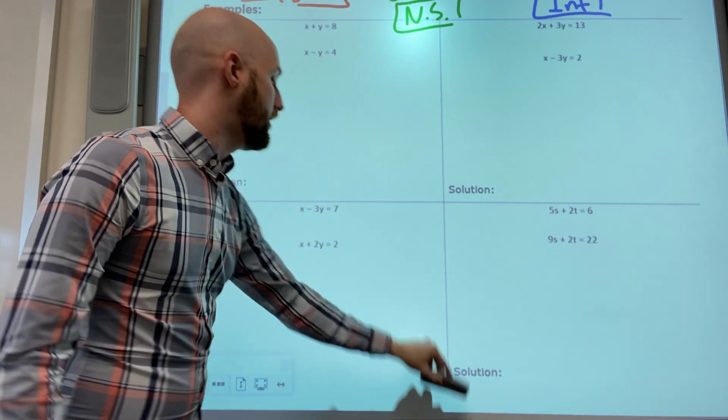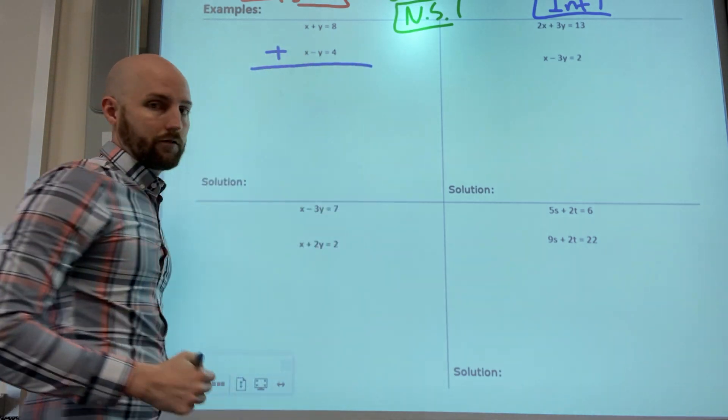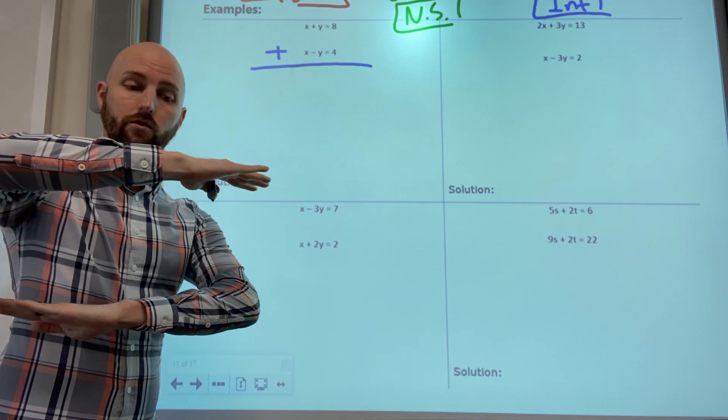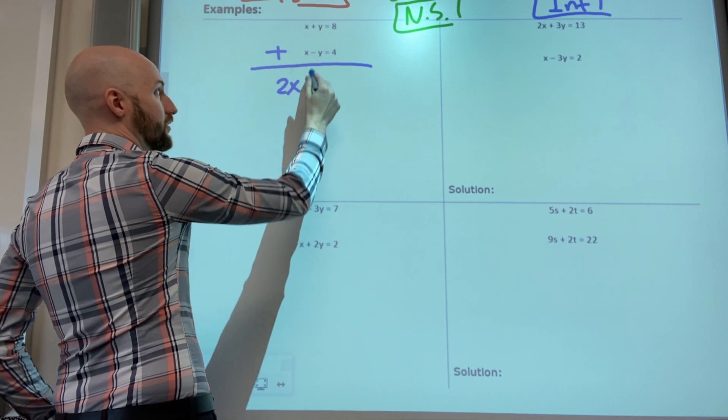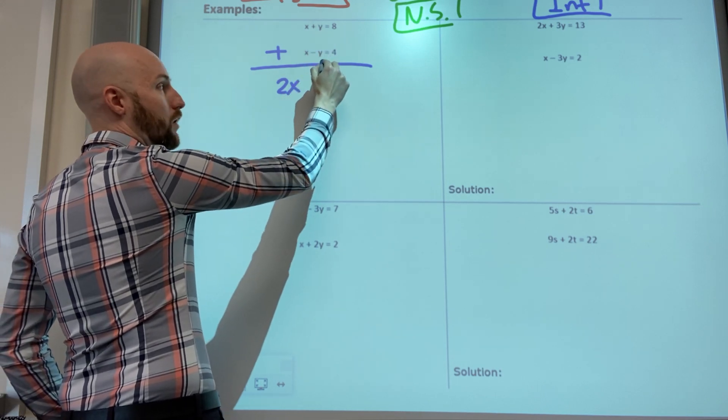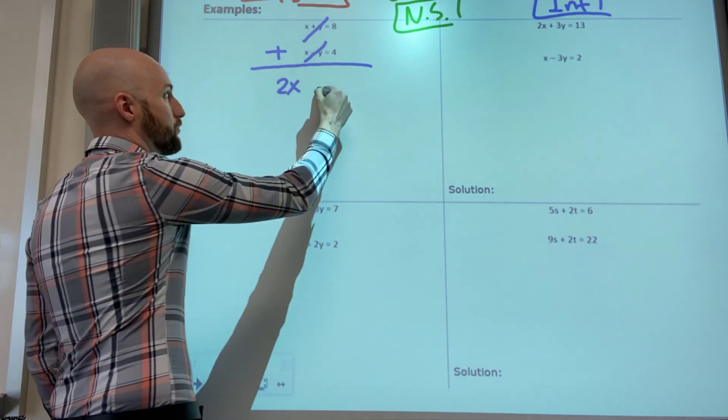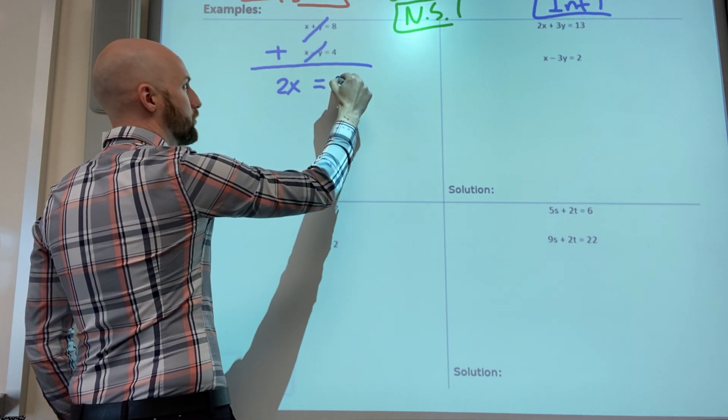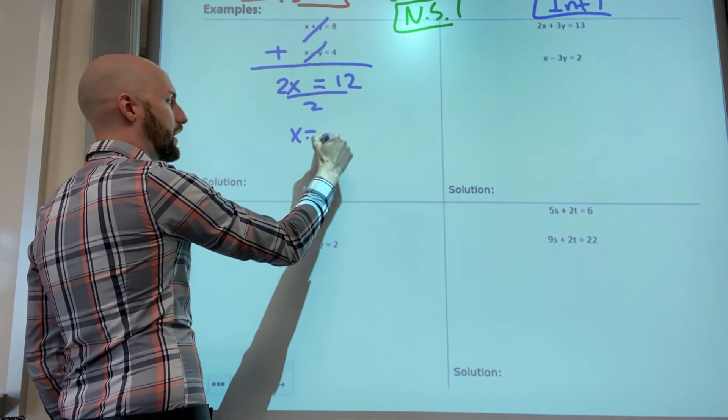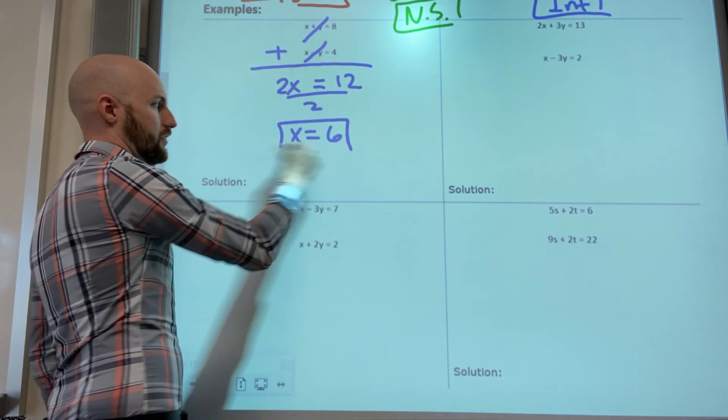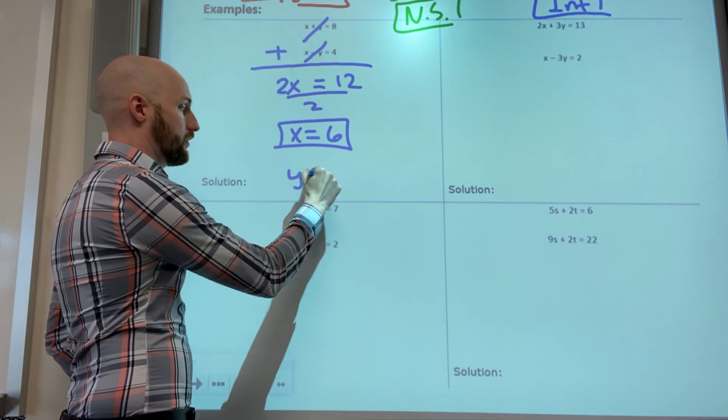Lo que voy a hacer es yo voy a sumar las dos ecuaciones. I'm going to add the two rows together. So x plus x is 2x, y minus y cancels or eliminates, equals eight plus four is 12, divided by two and x is six. I need to find the y.